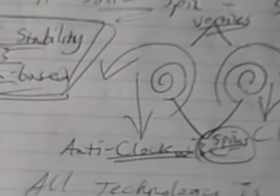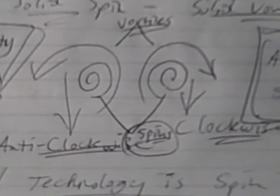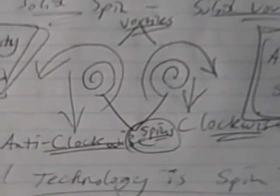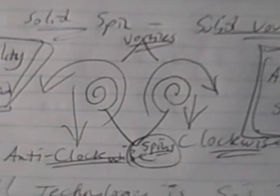All technology is spin technology. Spin in this sense comes back again to the basic principles. This would be the most fundamental principle actually of all science. It would be spin.